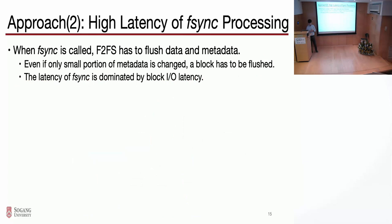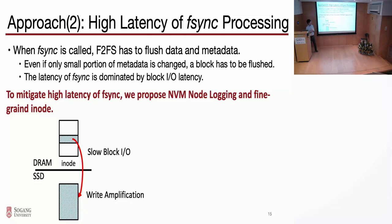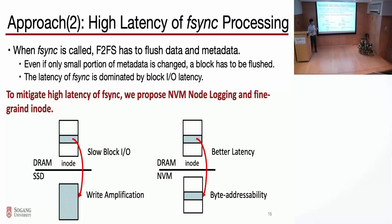The second approach is to achieve low latency for F-sync processing. When F-sync is called, F2FS has to flush the data and metadata. Even if we modify only a small portion of the inode, we have to flush in units of blocks because the SSD is used as a block device. That means F-sync latency is dominated by block IO latencies. To mitigate this high latency and write amplification, we propose MVM node logging and fine-grained inode. By flushing only the modified region of the inode, we can achieve lower latency and less write amplification.